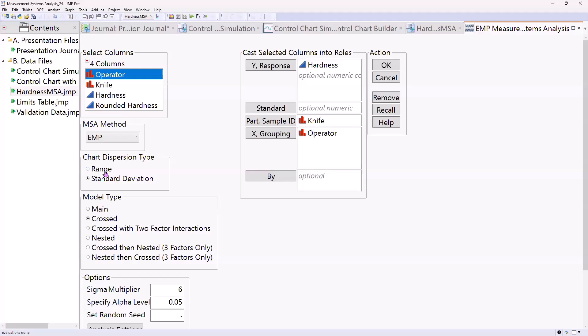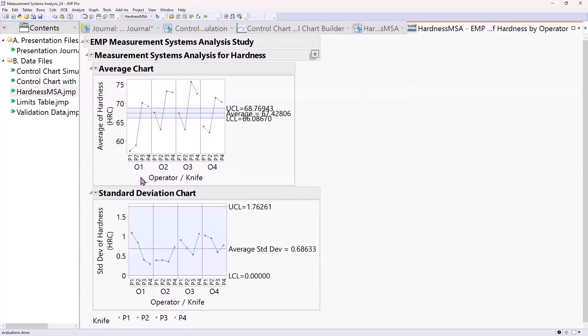If I'm looking at my laser range finder or possibly my digital caliper where my measurements are a little bit more refined, then standard deviation is a good method to do. So read his book if you want to know more details about it. Model type is crossed. And we'll click OK.